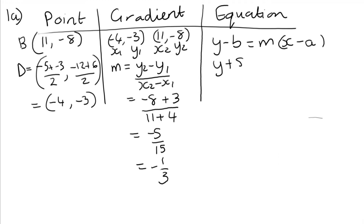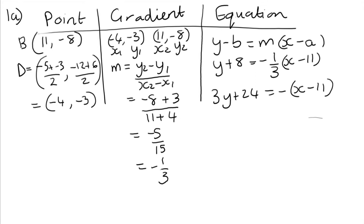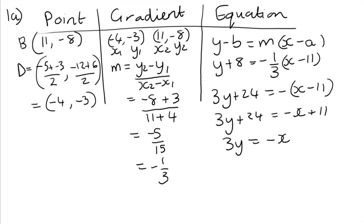The equation is y - b = m(x - a), so y + 8 = -1/3(x - 11). Multiply through by 3: 3y + 24 = -1(x - 11), giving 3y + 24 = -x + 11. Subtract 24: 3y = -x - 13. You could divide through by 3 to get y = -1/3 x - 13/3, but I'll leave it in the form 3y = -x - 13 as it's neat for simultaneous equations in part c.